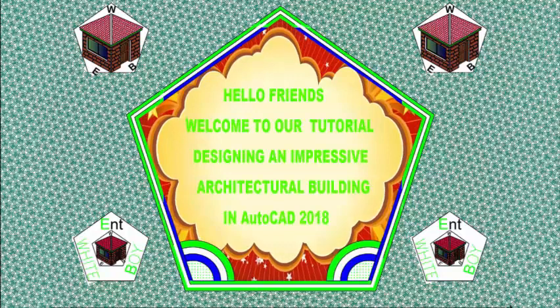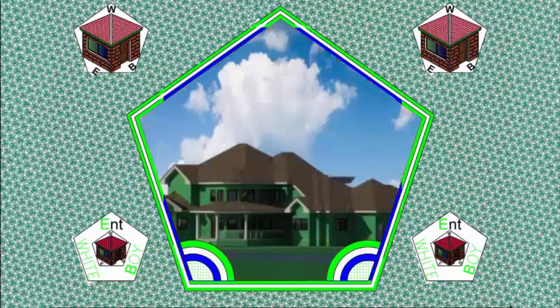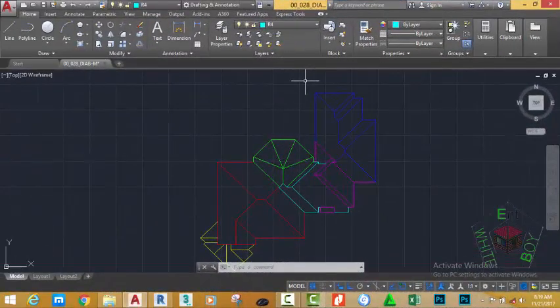Hello friend, welcome back to our tutorial on designing an impressive architectural building in AutoCAD 2018 metric. If you have been following along, go and open the file 00_028_diab_m where you saved it. You can also download this file from the website. If you don't have access, from exercise 5 just sit down and watch the video.